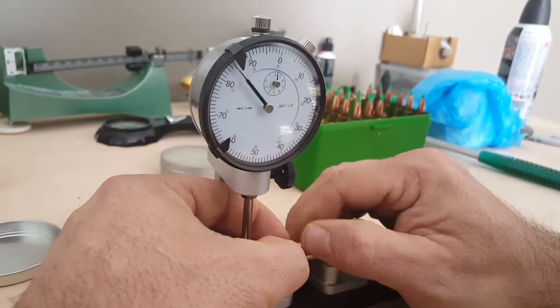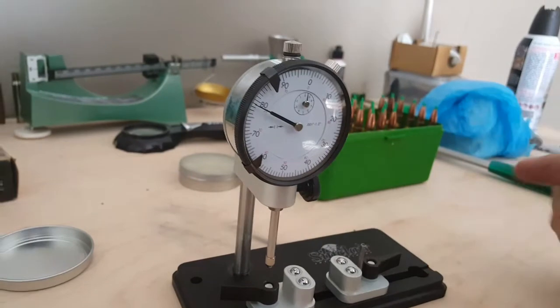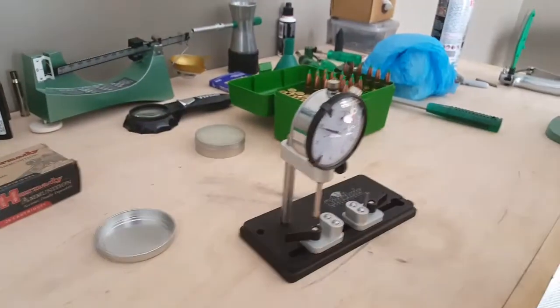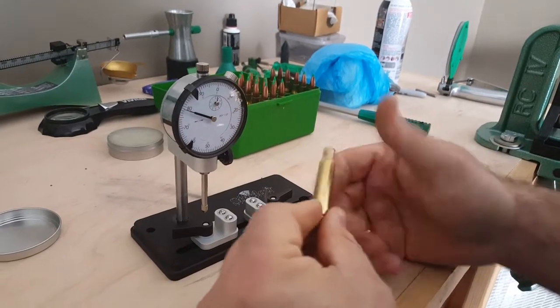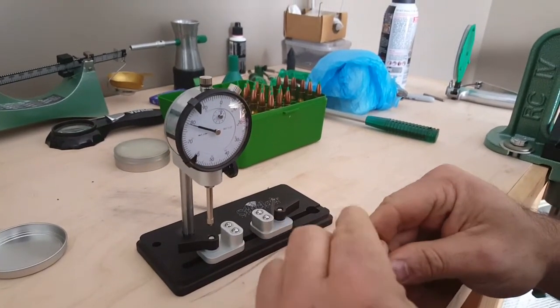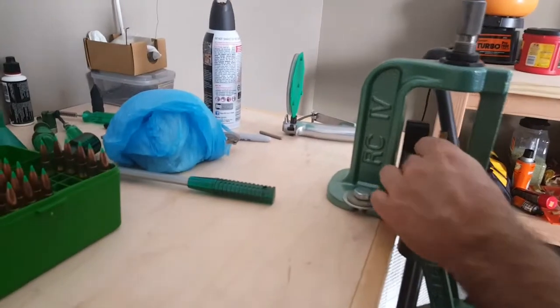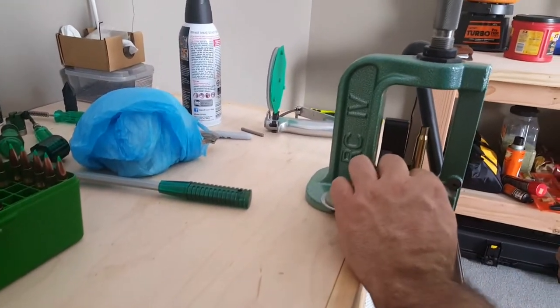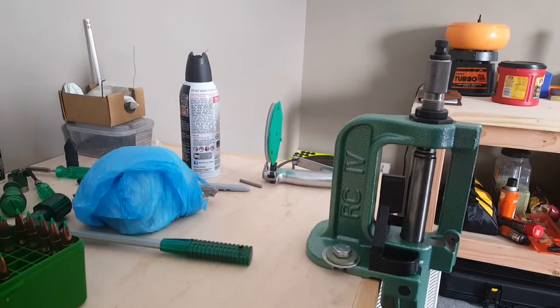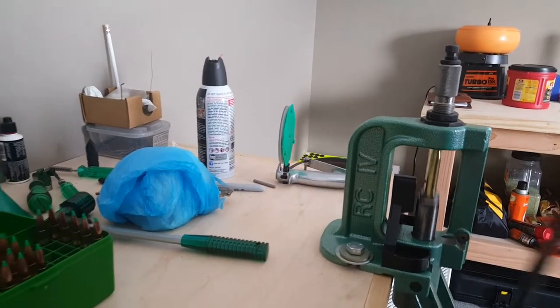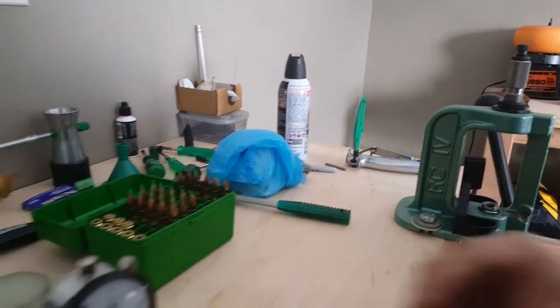It's got about a thou. I'm going to apply some imperial wax, a little bit per case. Run it up in my full-length resize die, pull down just a little bit, primer out, drag it back over the expander ball.